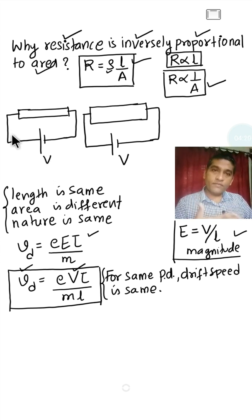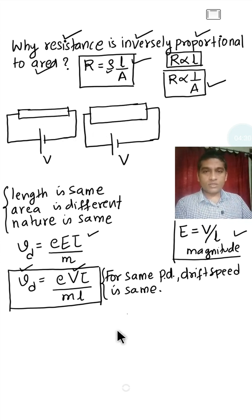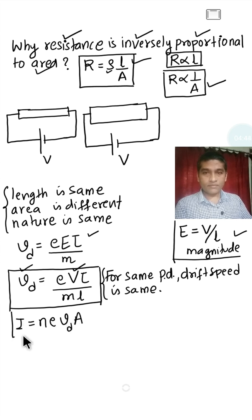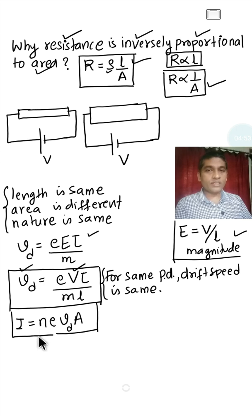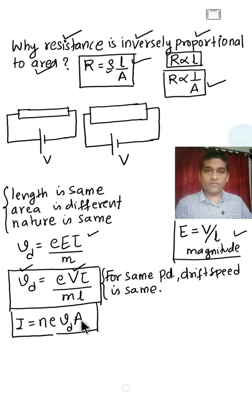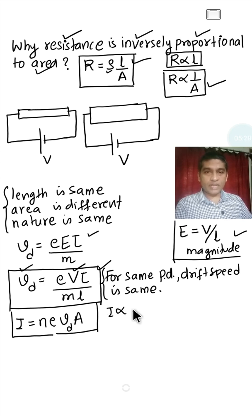Due to the potential difference, we find the current flowing in each conductor. We have the relation between current and drift speed: I equals N times e times Vd times A. In this relation, N is fixed or the same because the nature of the material is the same for both conductors, e is the charge on a single electron which is constant, and drift speed is the same. However, A is the area of cross section which is different. Therefore, we can write I is proportional to A.